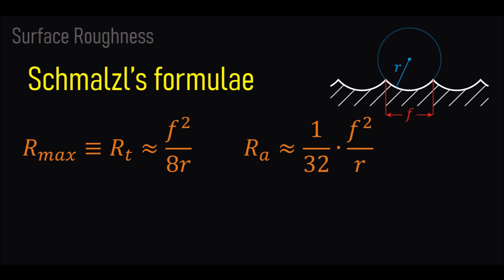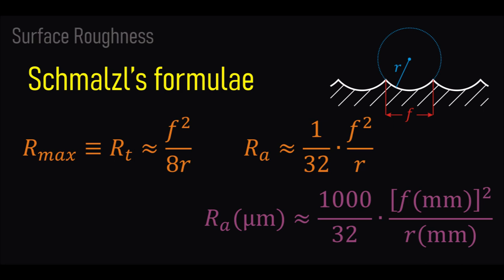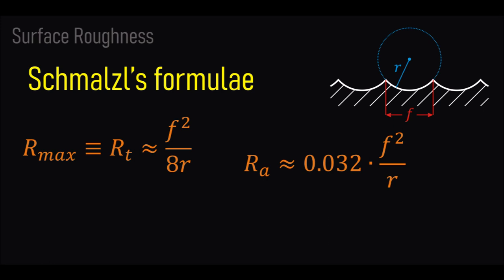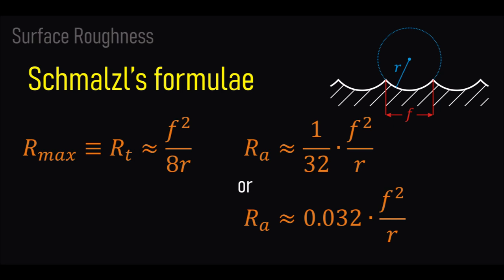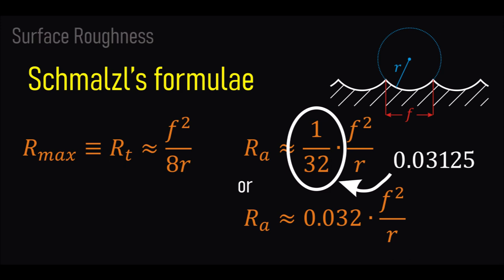The second Schmales formula gives an approximation for the average roughness R_A as 1 over 32, times the feed rate squared over the radius. Again, this usually comes with an extra factor of 1000 for compensating the different units of measurement. But there is another version of that second formula, where we have instead 0.032, instead of 1 over 32. It's a bit confusing to have two different formulae for the average roughness. It's fair to say that 32 is ambiguous.